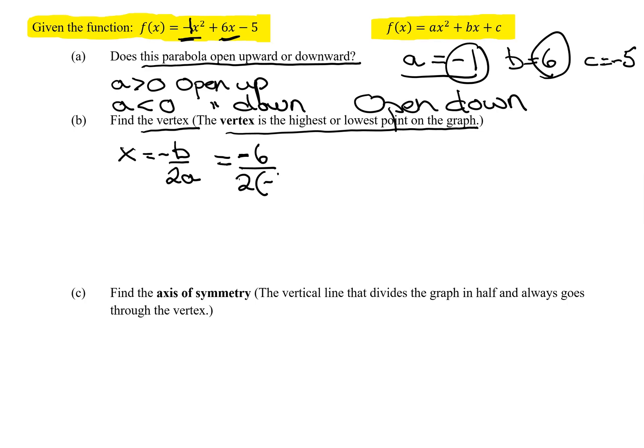So it's negative 6 over 2 times what is a? Negative 1. So it's negative 6 divided by negative 2, which is positive 3. So that's the x value of the vertex.